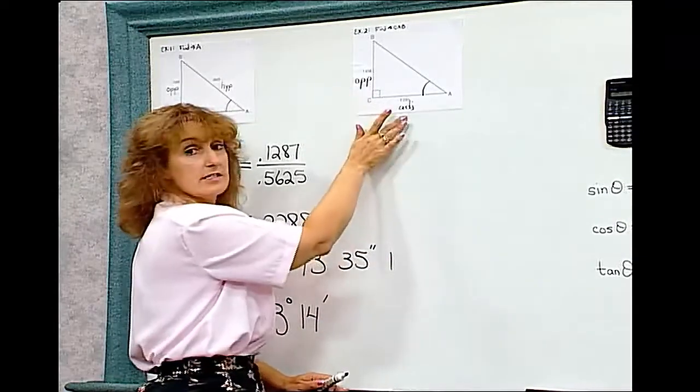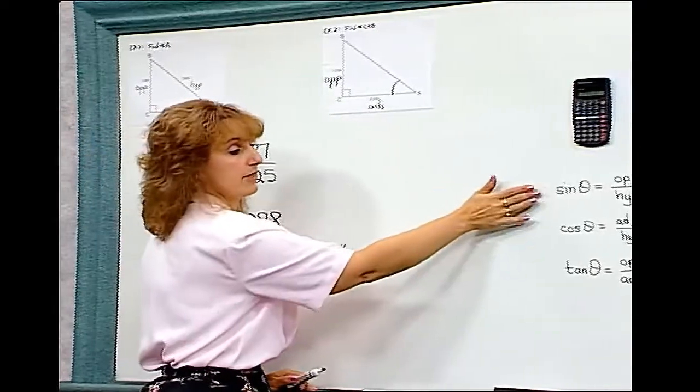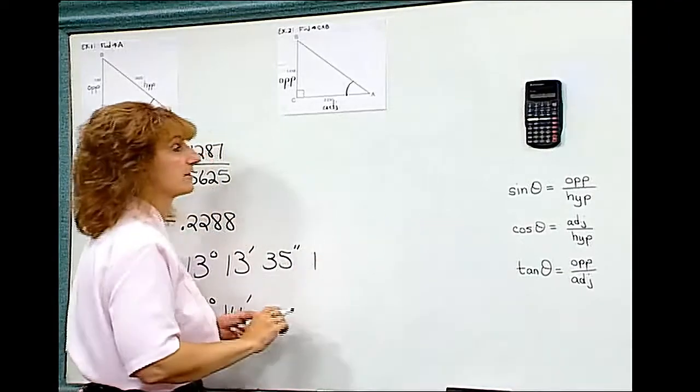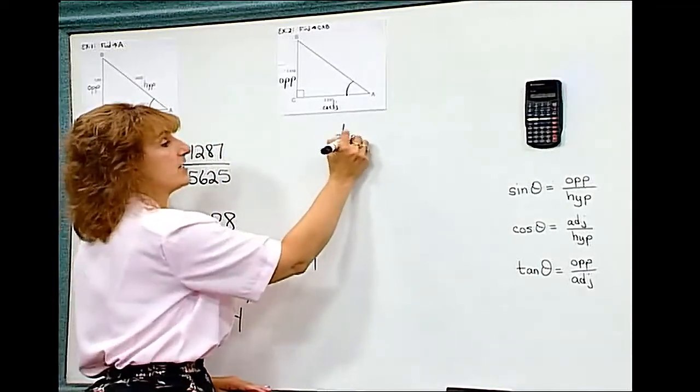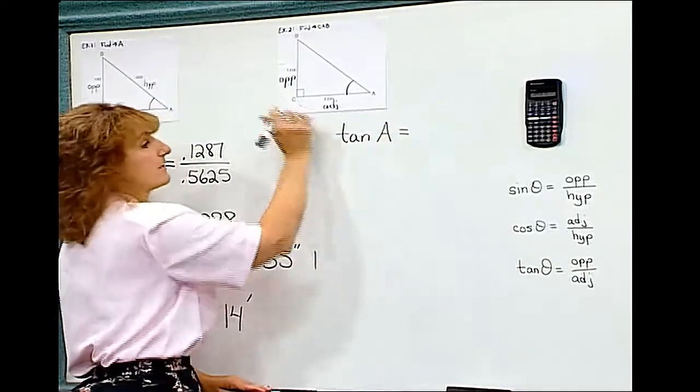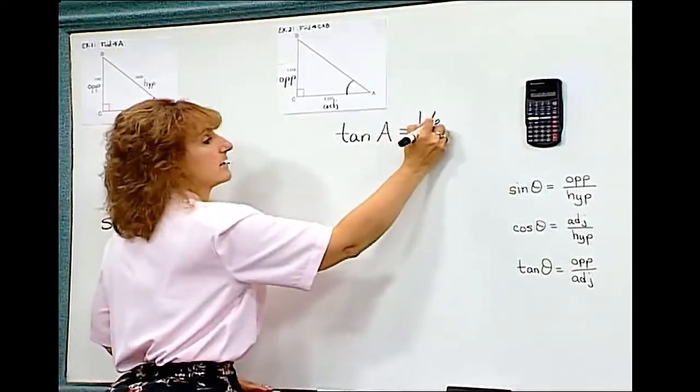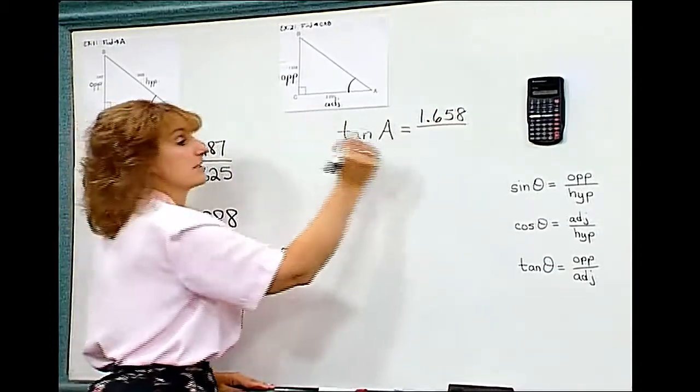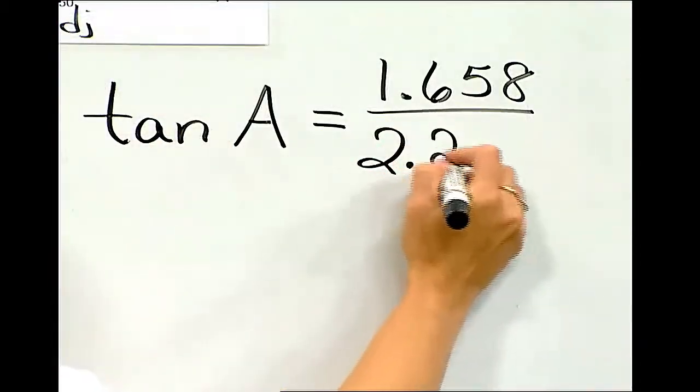Looking at my three trig functions, I'm going to need to use tangent. So I have the tangent of angle A is equal to opposite 1.658 divided by adjacent 2.25.